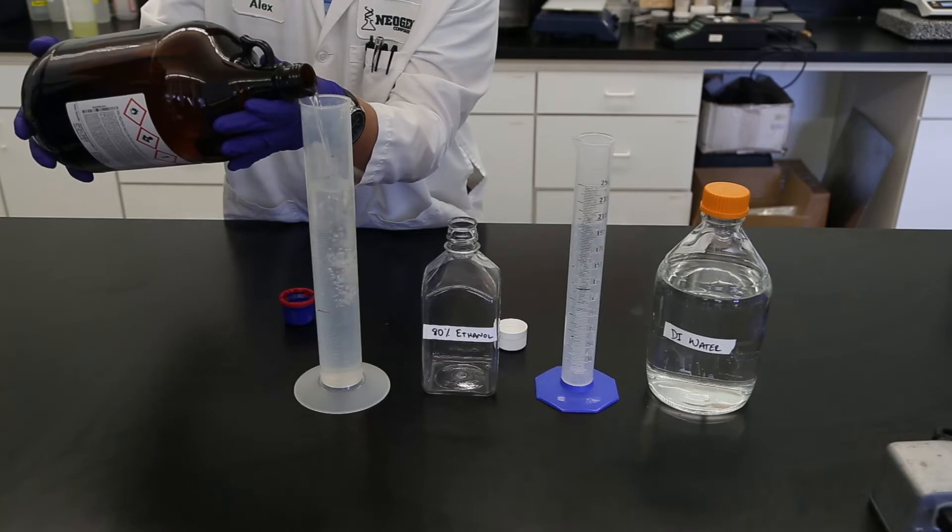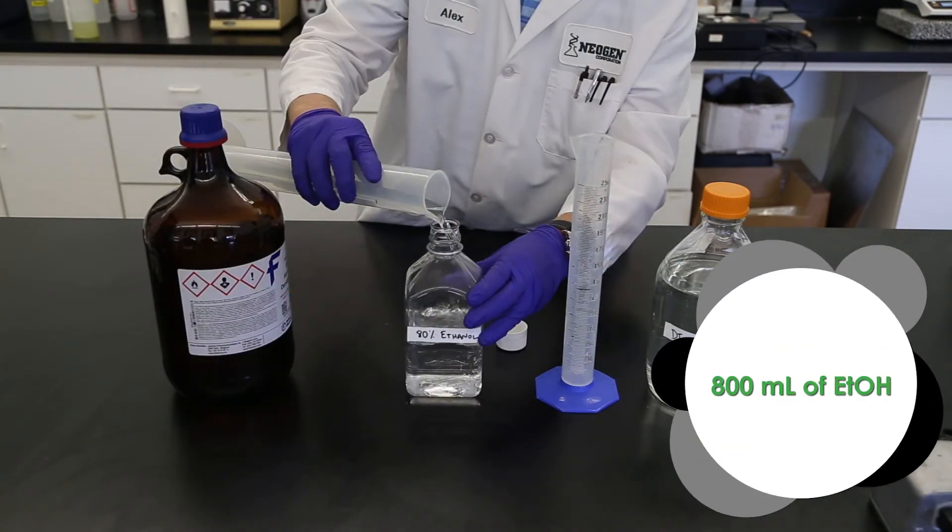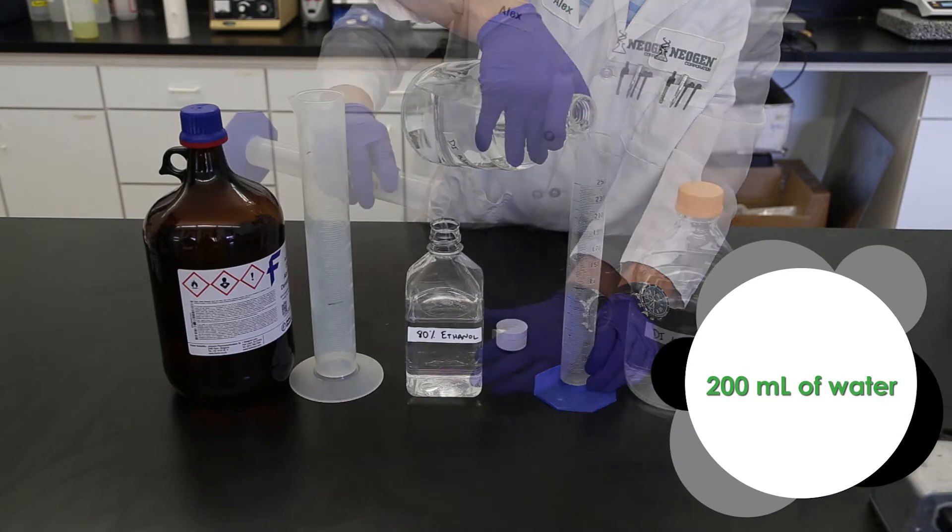Prepare an 80% ethanol solution by combining 8 parts ethanol with 2 parts distilled or deionized water.